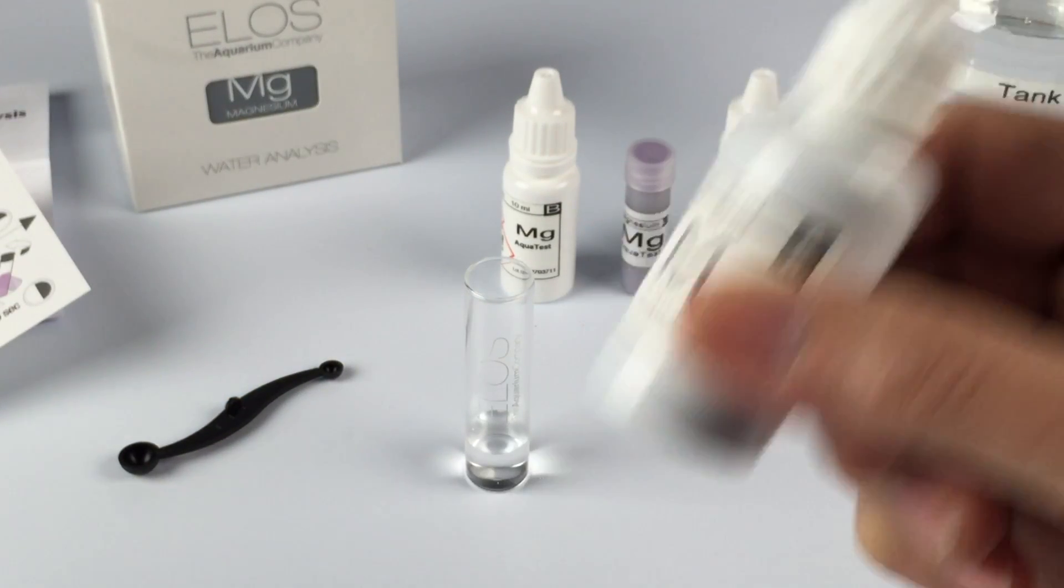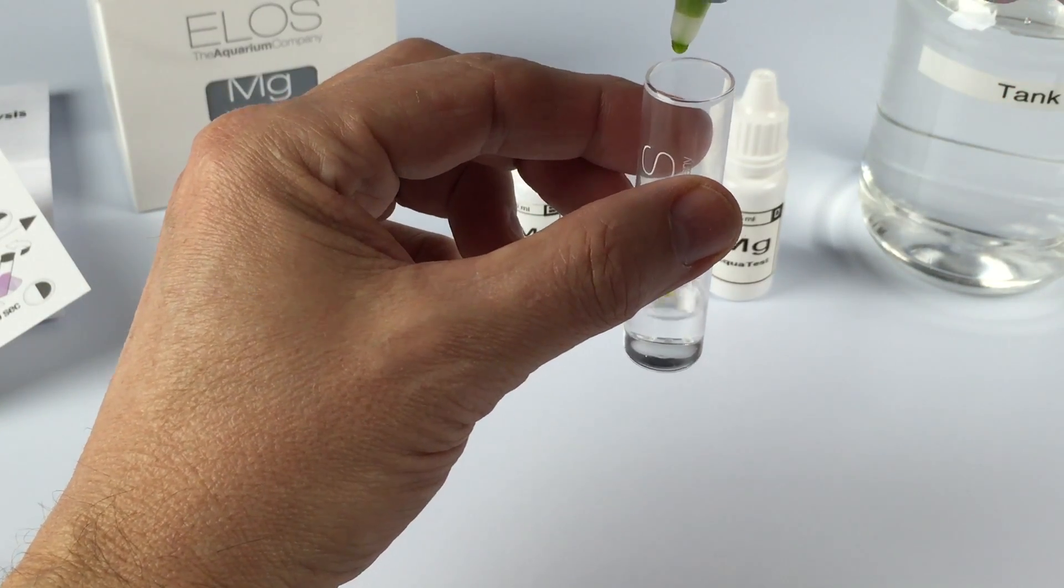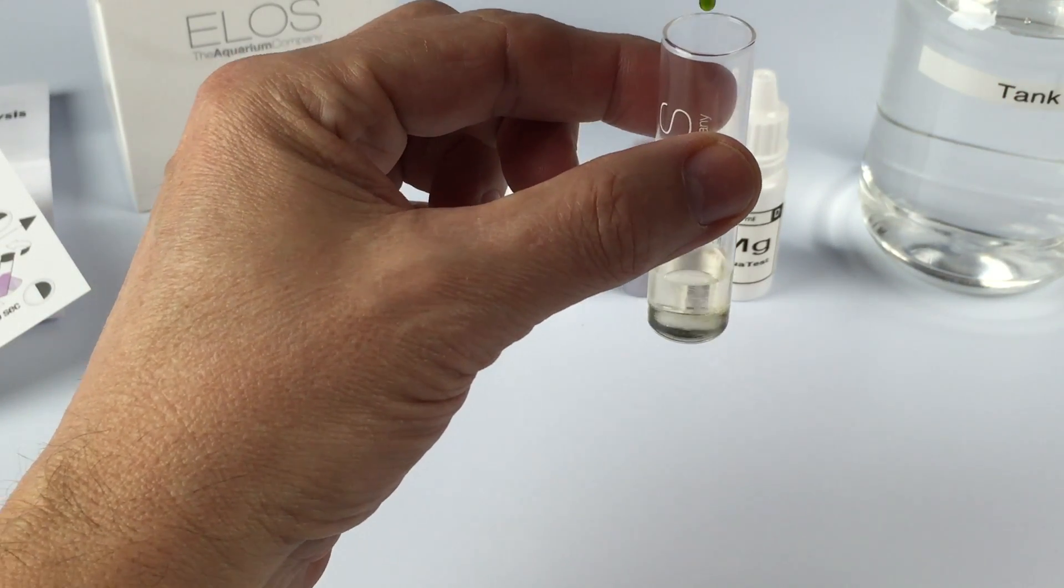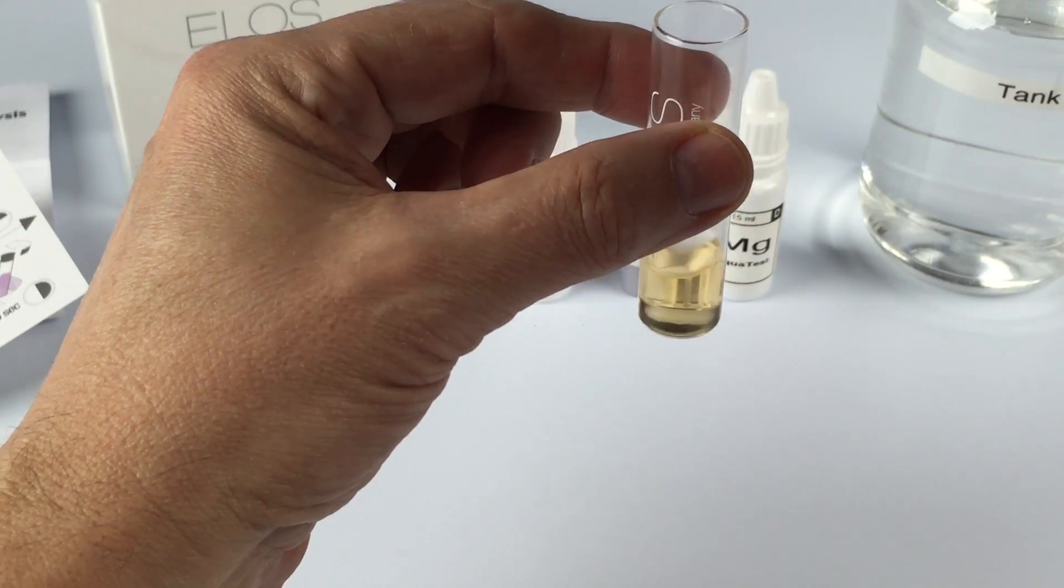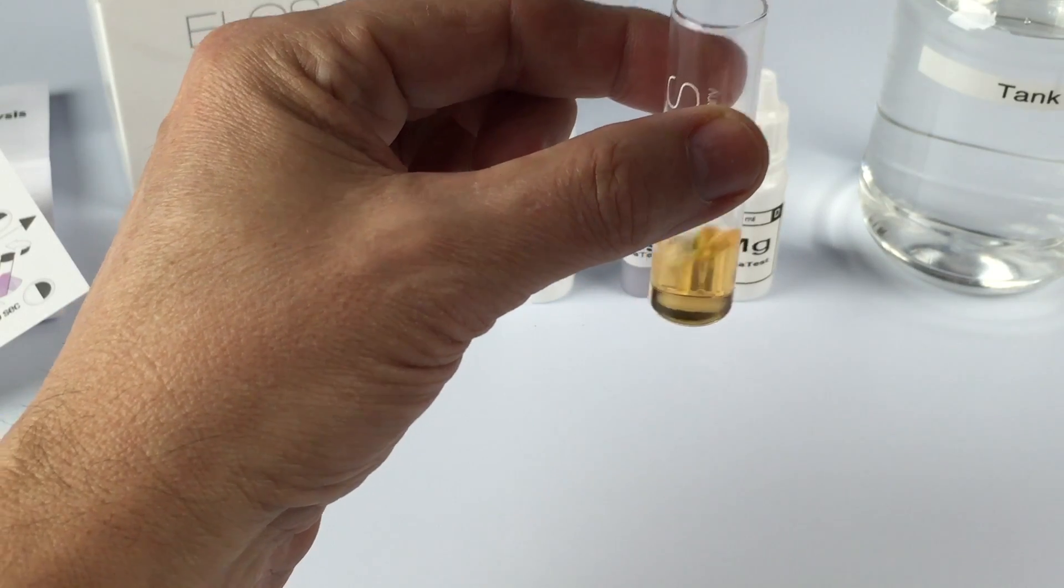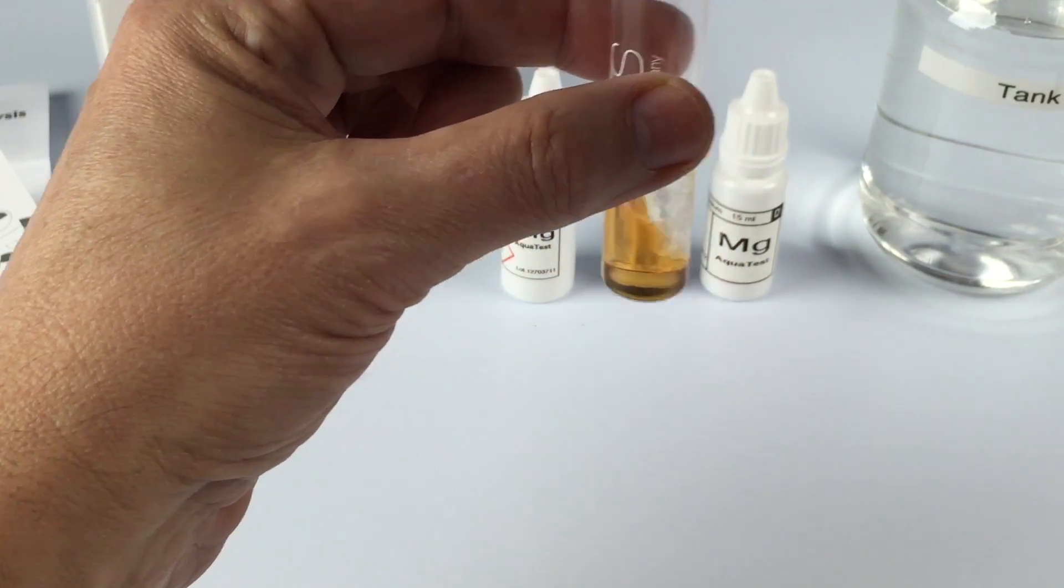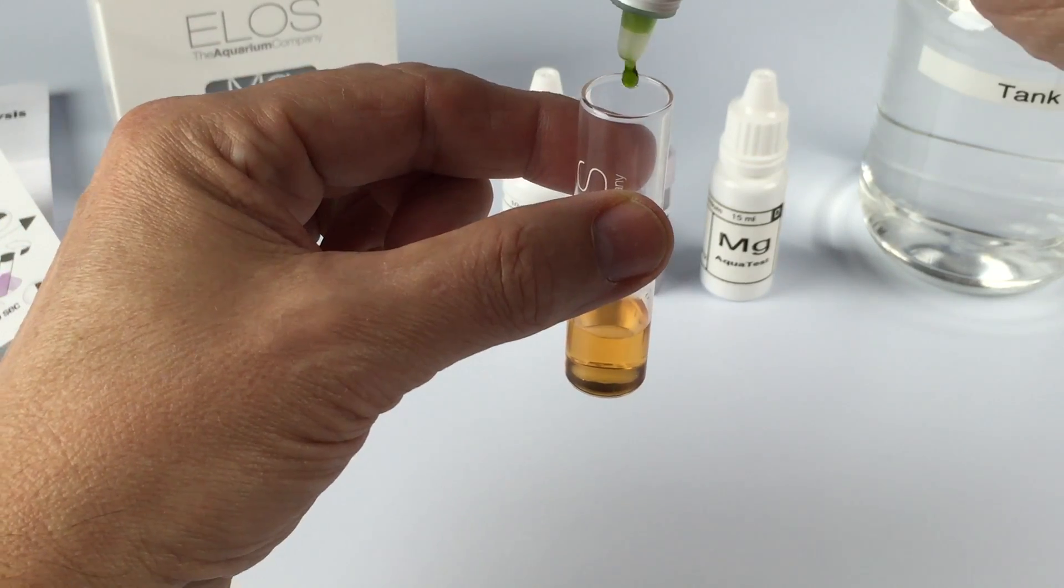Shake Part A for 15 seconds. Next, you're going to add it drop by drop, counting them and shaking the vial after each drop. I'll give you a heads up: you'll probably use 28 to 32 drops to get this to turn from peach to green, and you need the green color to stay green for 20 to 30 seconds after you're done.